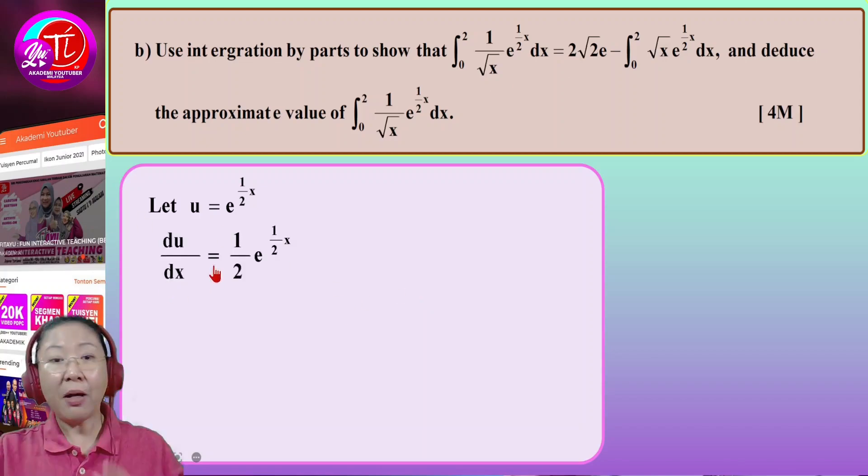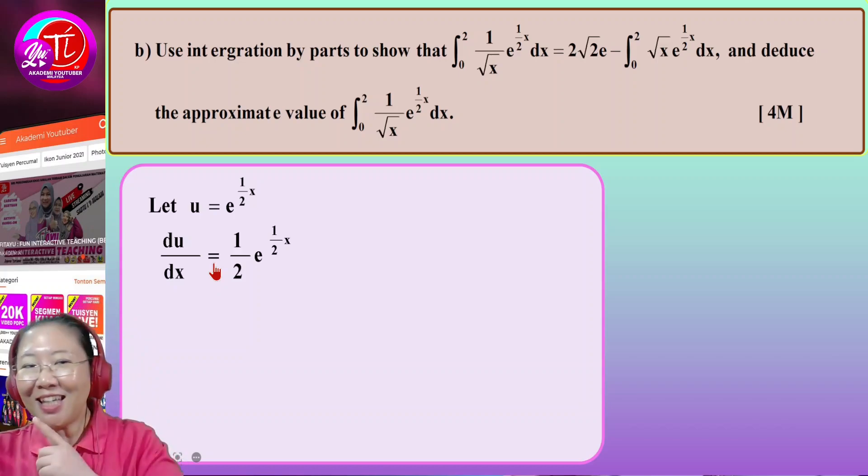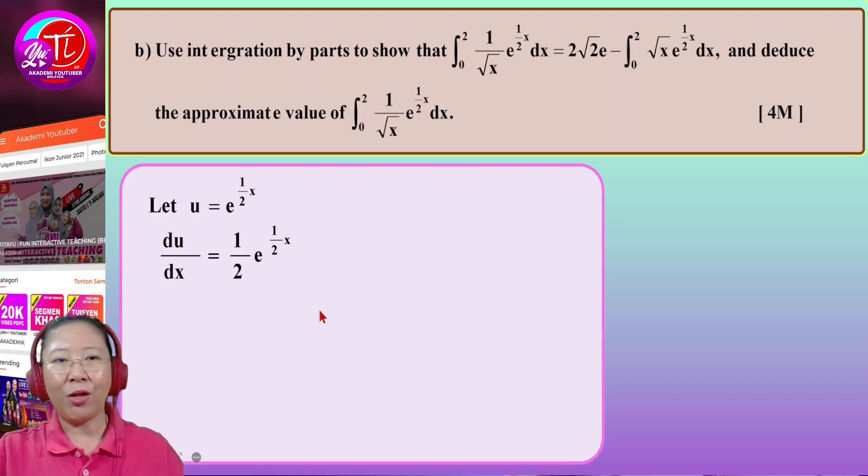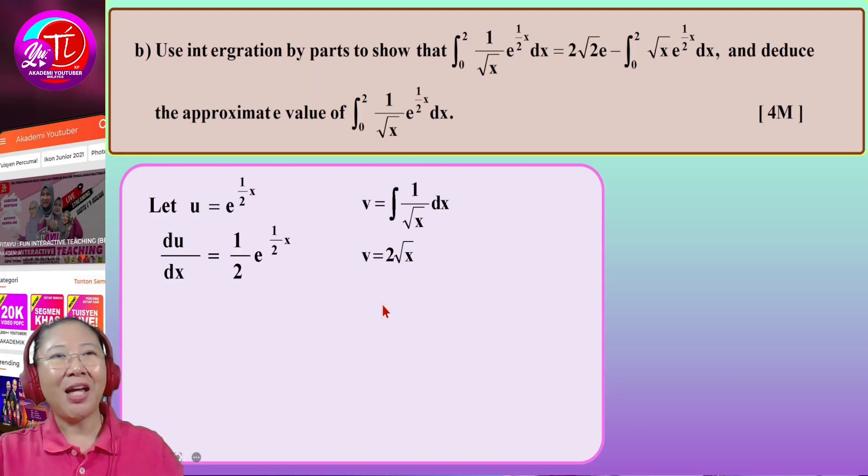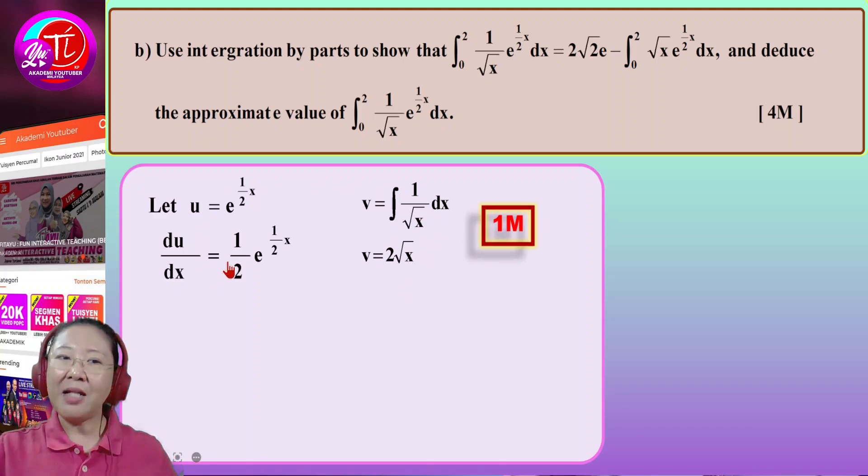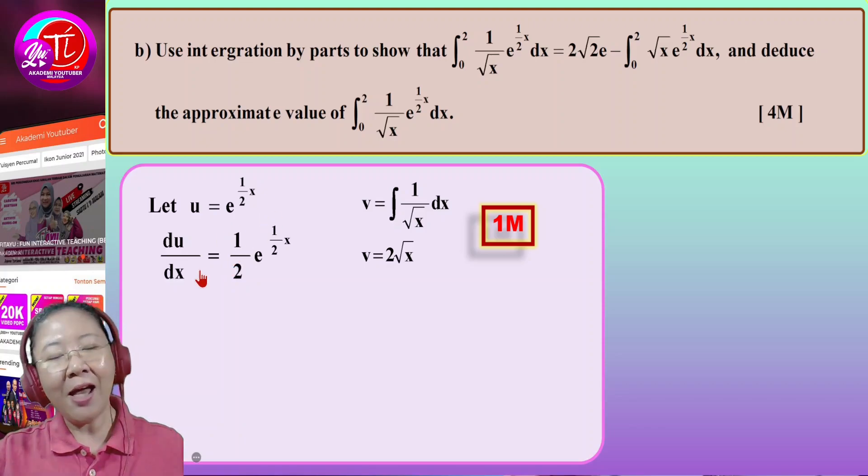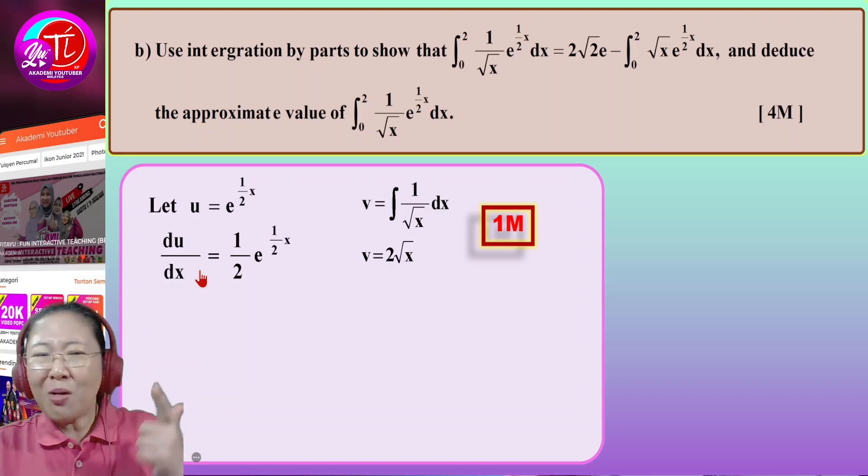So integration by parts, you have to choose the correct U and correct V. If you do not remember LIATE, choose the exponent as the U and then the V will be whatever left behind. You will get your du/dx and integrate your V to get this value. After you have already set in the U and V, means you have made a correct choice of your U and your V and doing the integration and the differentiation. They will give you one mark for it. Fun, right? So easy to get marks.